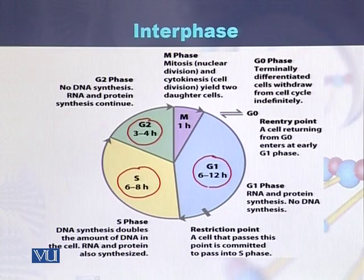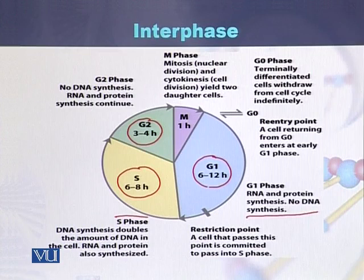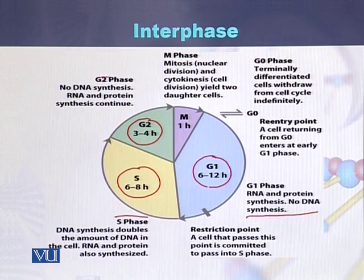In case of G1 phase, that is after mitosis, there is RNA and protein synthesis, but during this phase there is no DNA synthesis. While in case of S phase, there is DNA synthesis — DNA replicates — and there is also RNA and protein synthesis during the S phase.